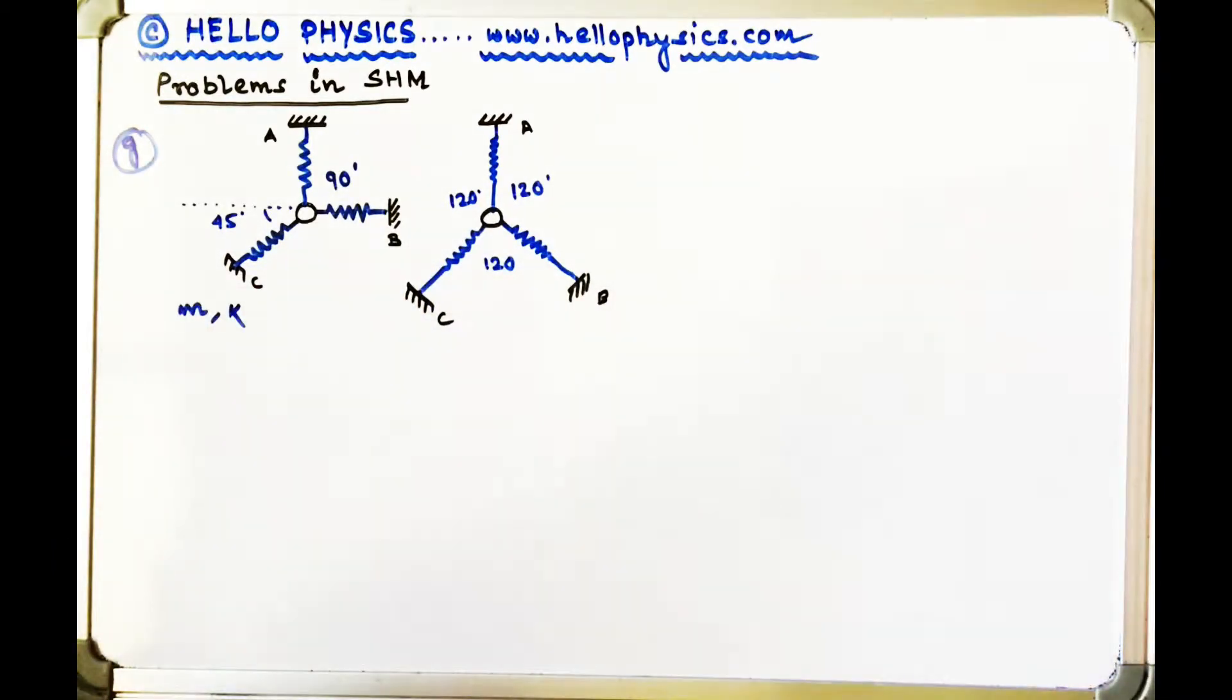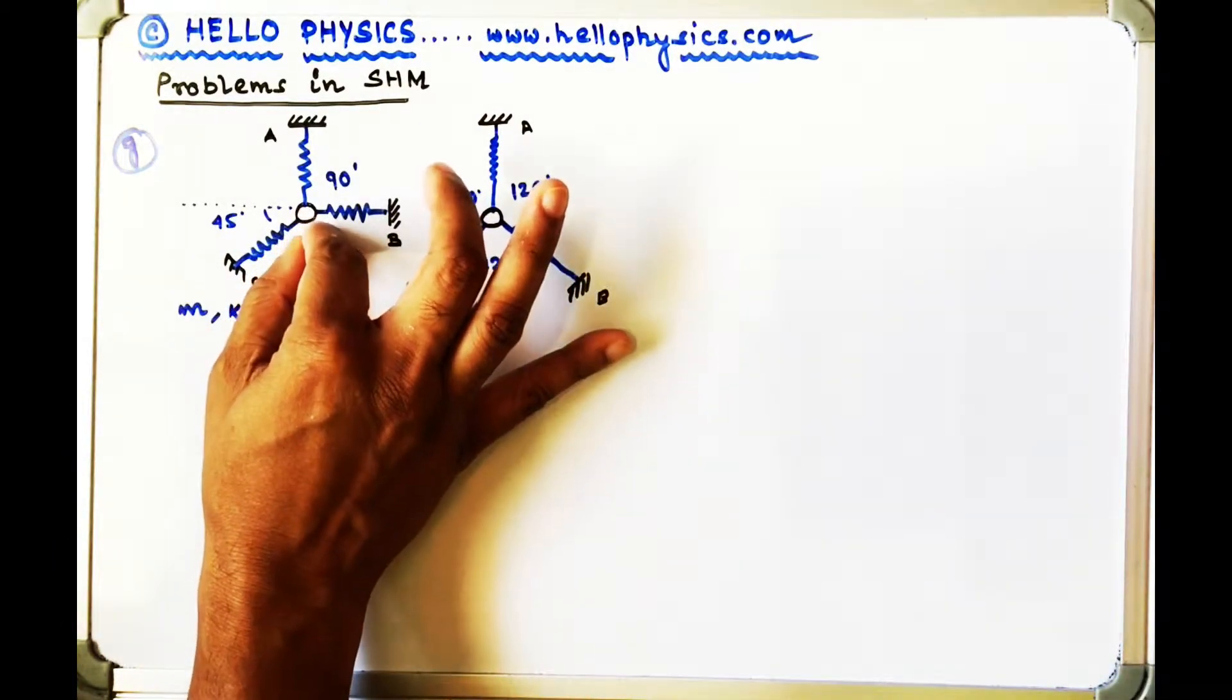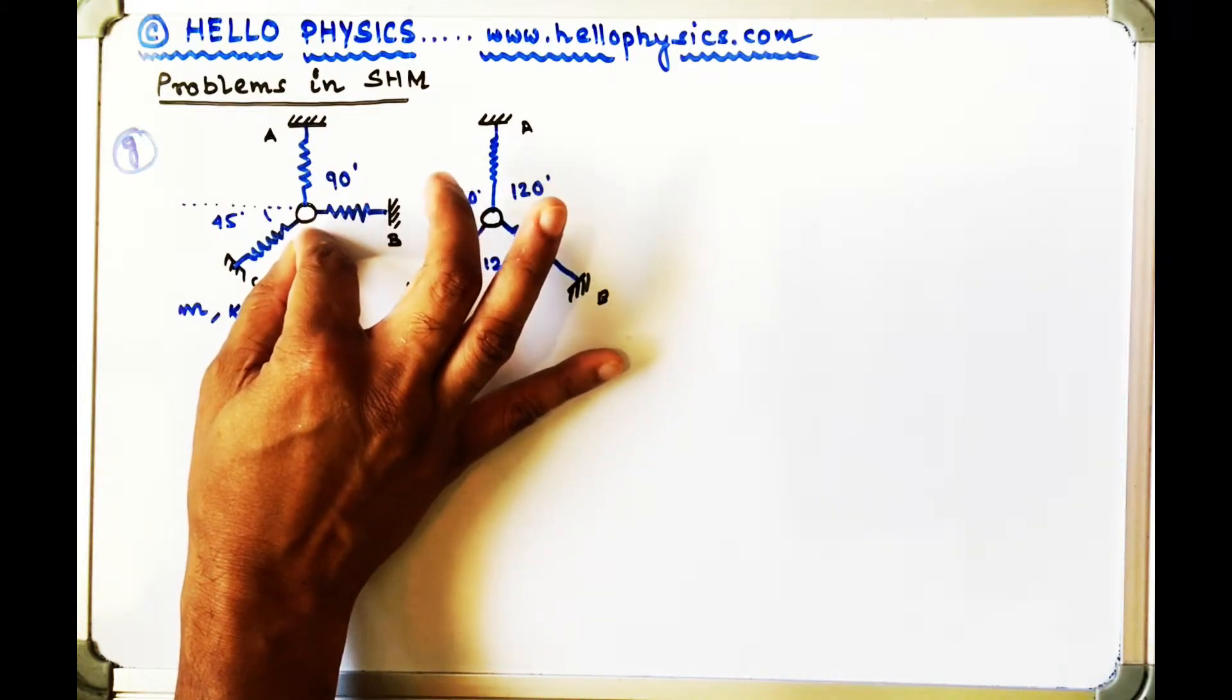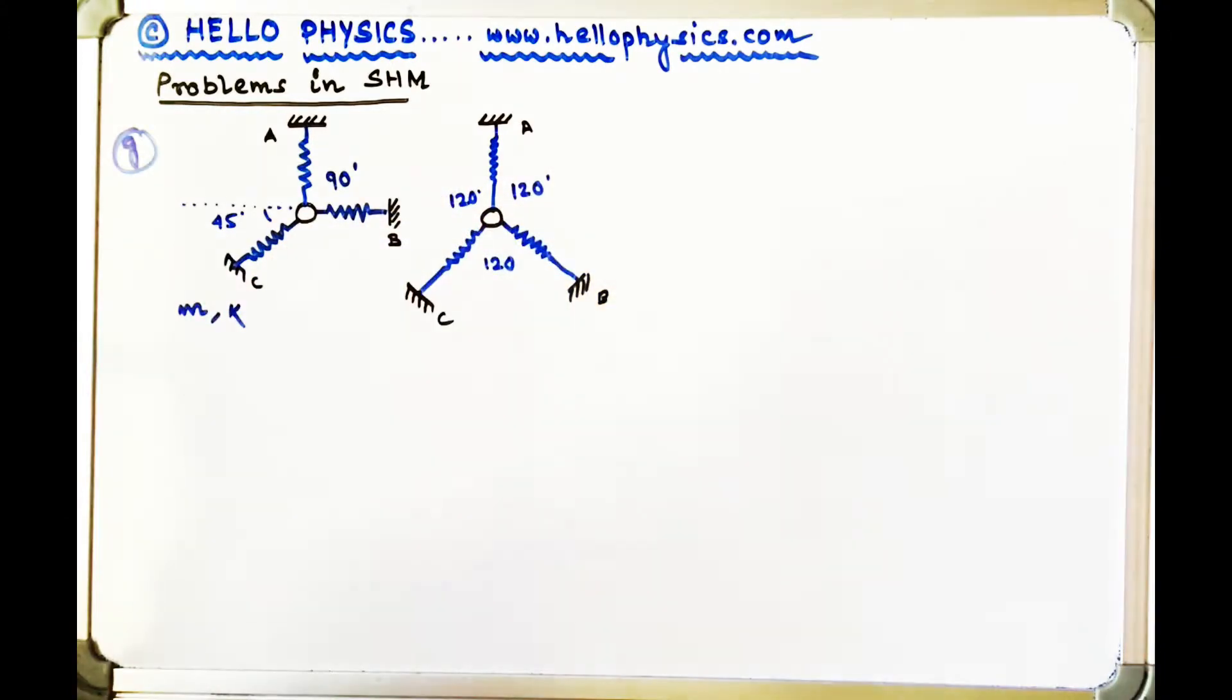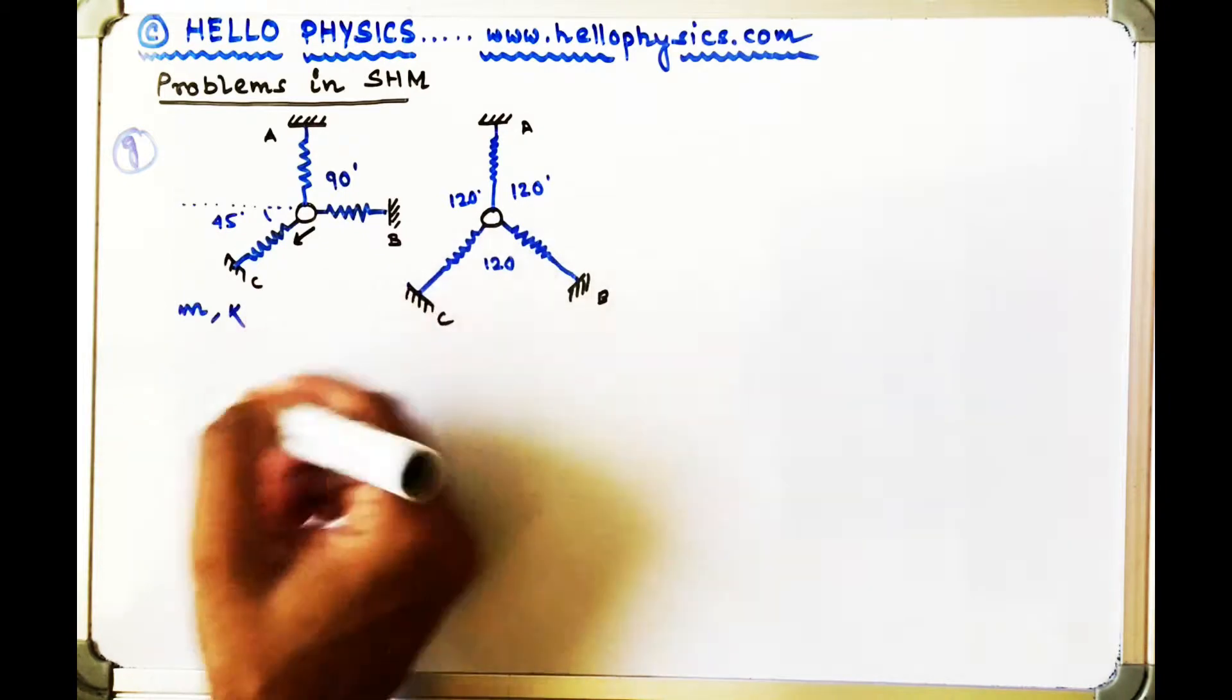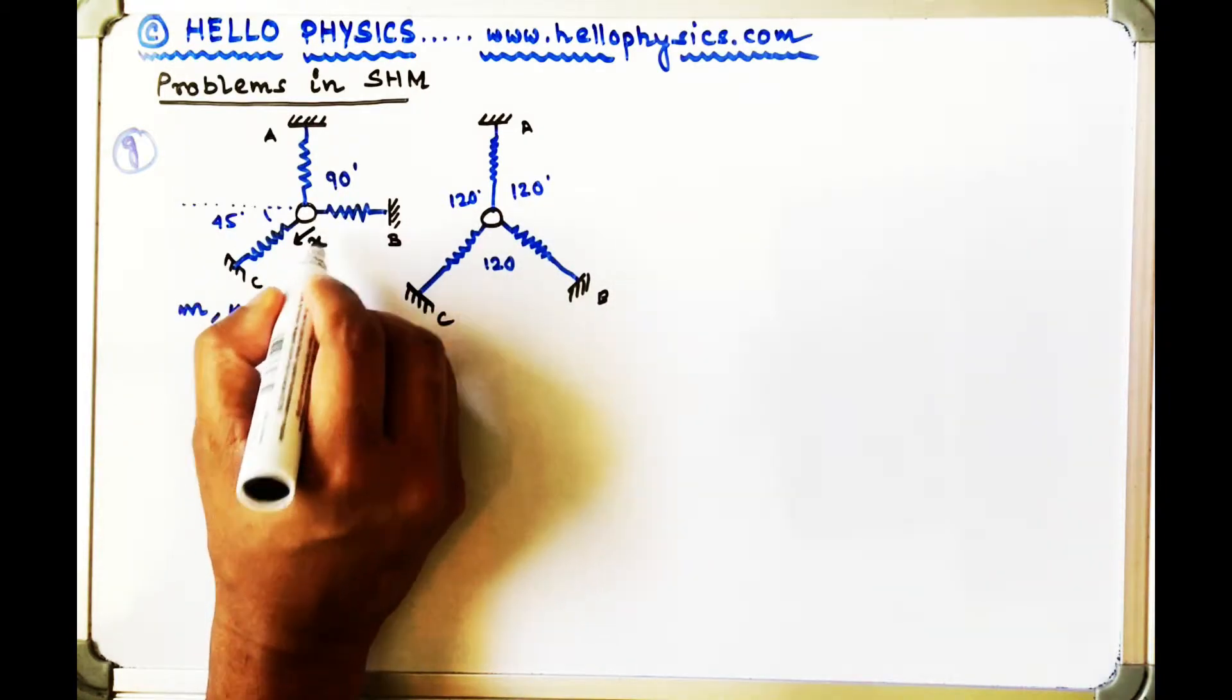So what is done is, this object is taken and it is moved in such a manner that it compresses spring C along its length. So a small displacement is given in this direction, let's say of an amount of X.